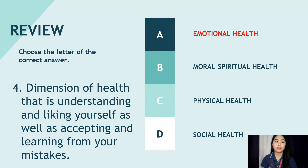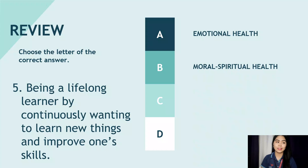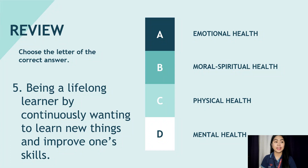And last, number five: Being a lifelong learner by continuously wanting to learn new things and improve one's skills. A. Emotional health, B. Moral-spiritual health, C. Physical health, and D. Mental health. The correct answer is Letter D, Mental health. Did you get a perfect score? Very good!